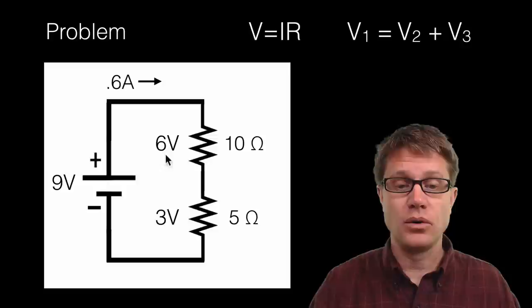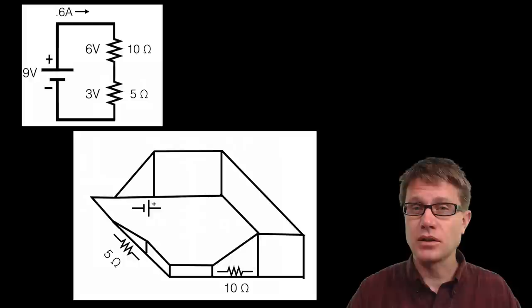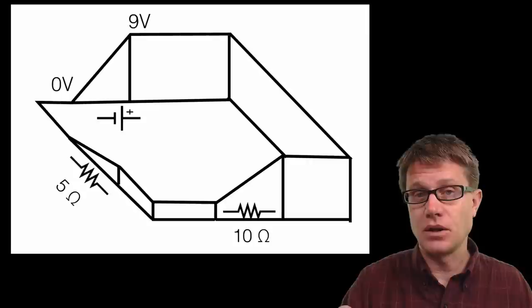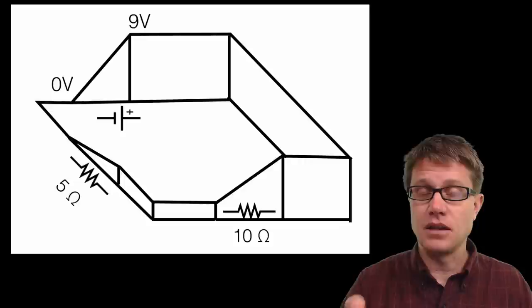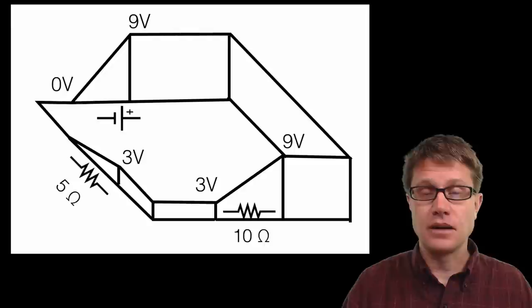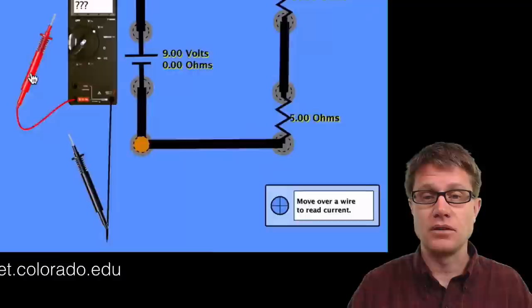Think about that same circuit drawn like a roller coaster. The battery lifts the potential from 0 volts up to 9 volts, giving the charge potential energy. As it moves through the wire the potential stays at 9 volts until we reach the first resistor — a 10 ohm resistor — which drops it from 9 volts down to 3 volts, a drop of 6 volts. Then the second resistor drops it from 3 volts back down to 0 volts.